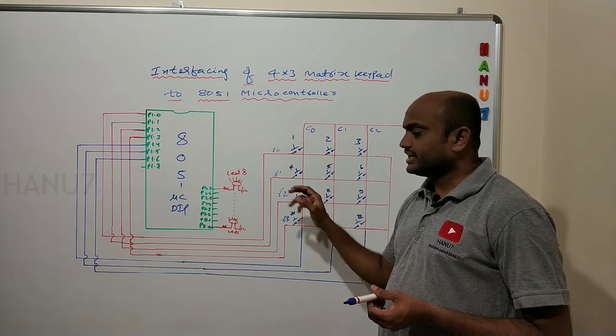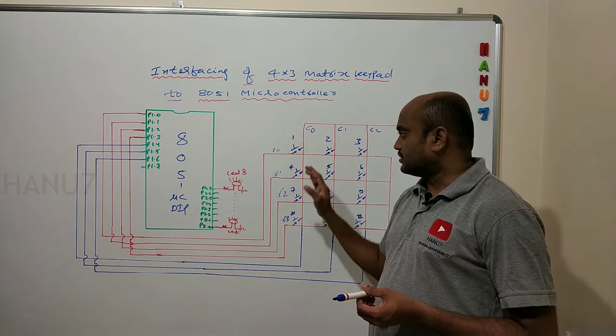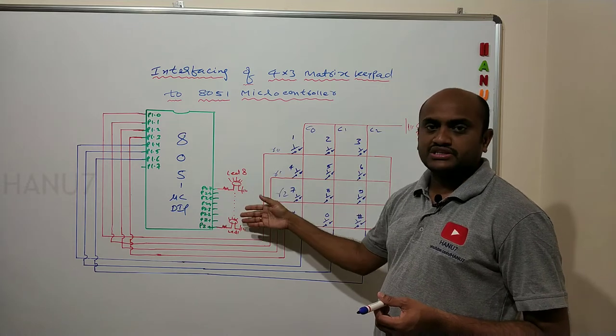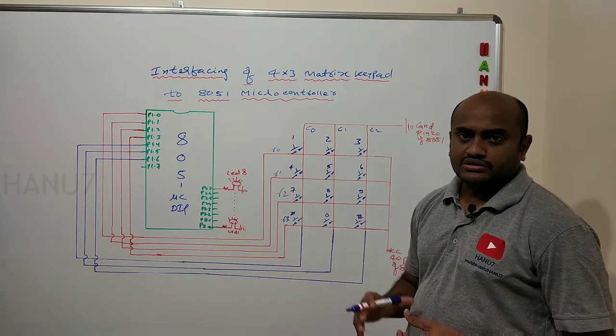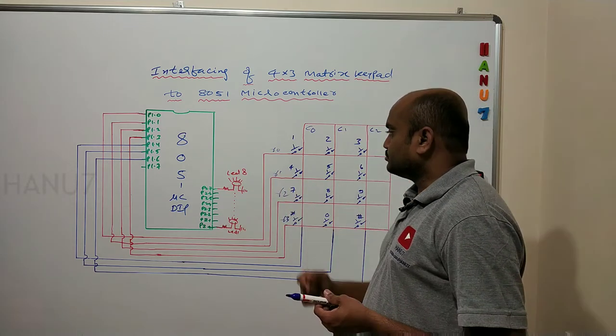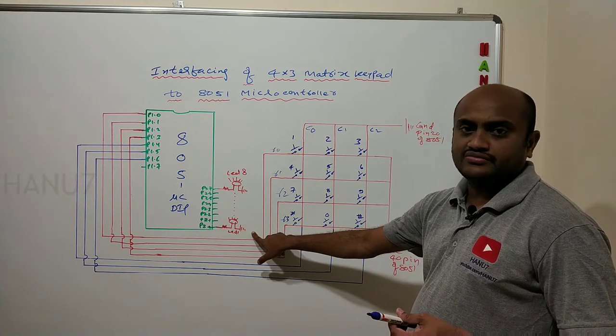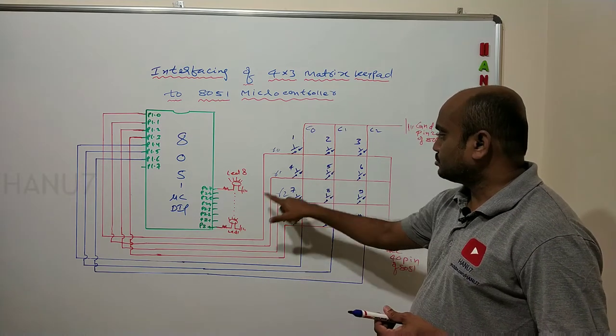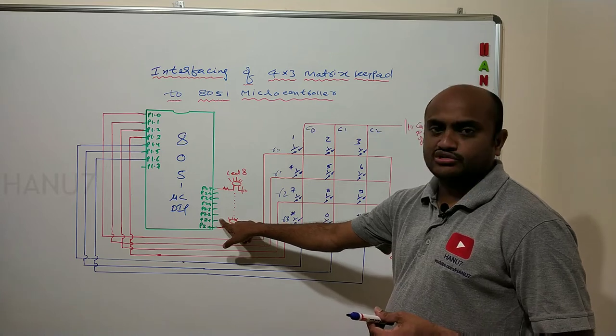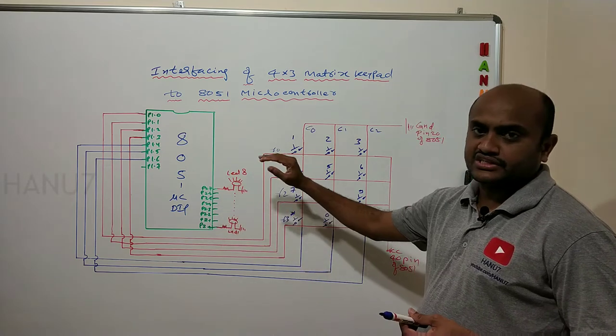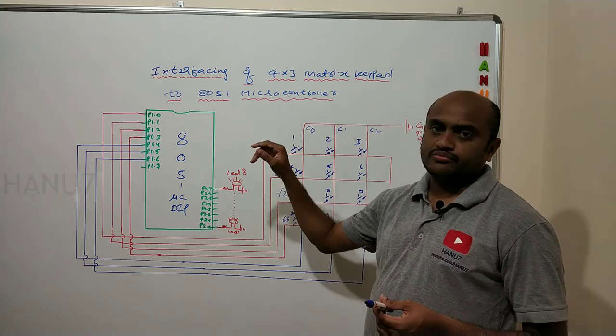Whatever you type in the keypad should appear on the LCD or LEDs. If I press key number 1, LED 1 will glow. If I press key 2, LED 2 will glow, which is connected to P2.1. Similarly for all 8 LEDs. If I press the 8th button, the 8th LED will glow.